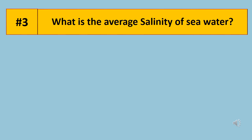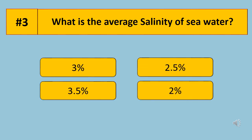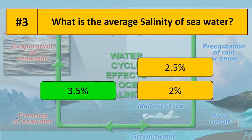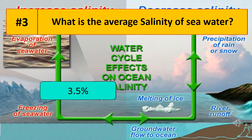Question 3. What is the average salinity of sea water? The average salinity of sea water is 3.5%.